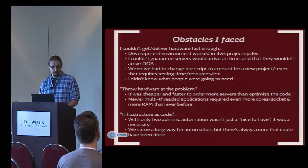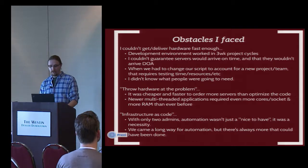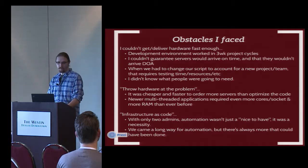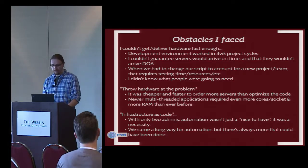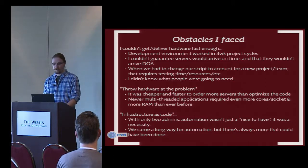Another problem I faced was that senior management always wanted to throw hardware at the problem because it was cheaper and faster to order servers than to optimize the code. Newer multi-threaded applications required more cores, more RAM, more network paths, more disk, SSD — they just needed lower latency and higher speed. And infrastructure as code — my team only had two admins so automation wasn't just a nice to have, it was a necessity.